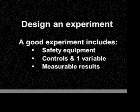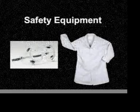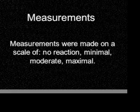A good experiment includes safety equipment, controls and one variable, and measurable results. Safety goggles protect your eyes, and lab coats protect your skin and clothing. Controls tell us that the response we observe is most likely due to our variables and not other factors. We decided that we would measure our result on a scale from no reaction, minimal, moderate, and maximal reaction.